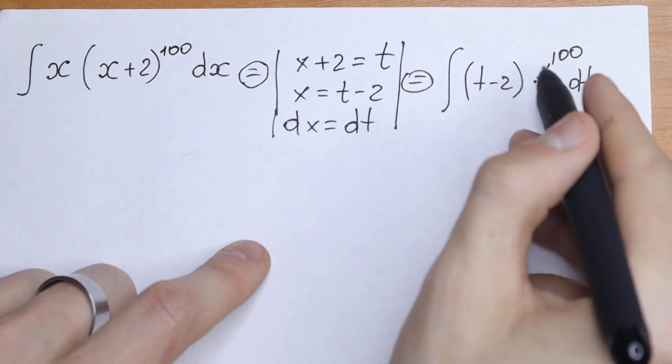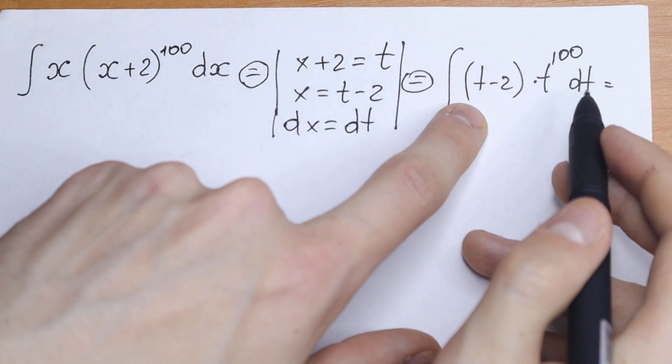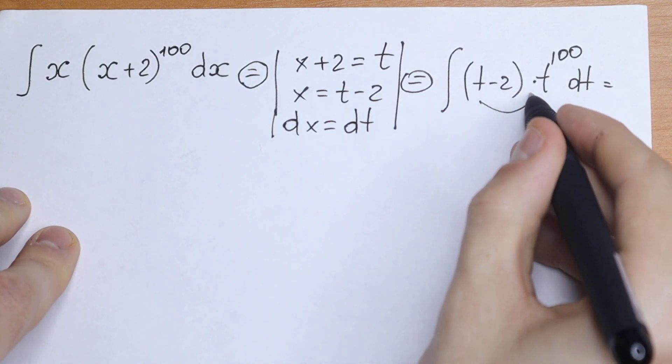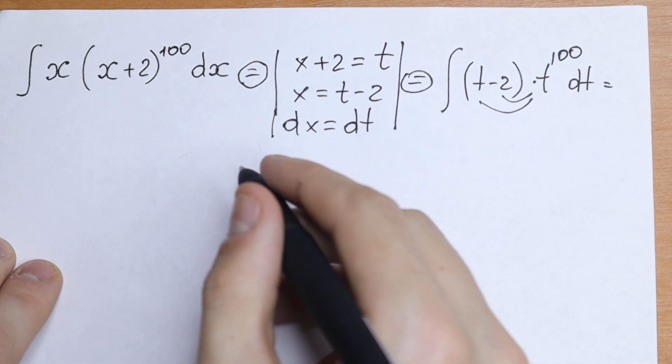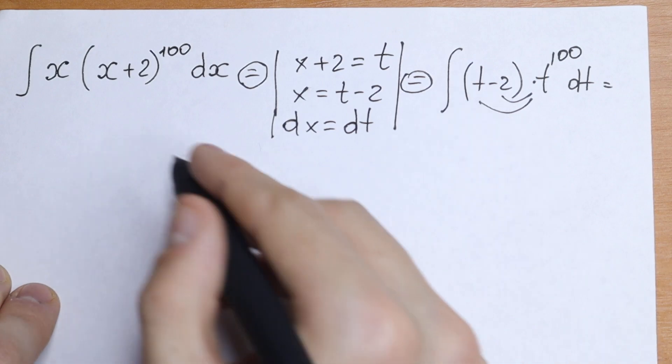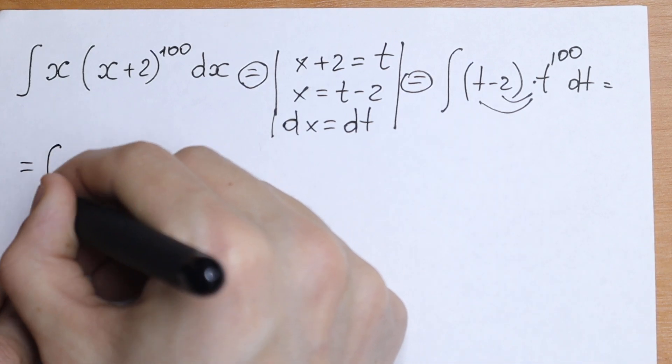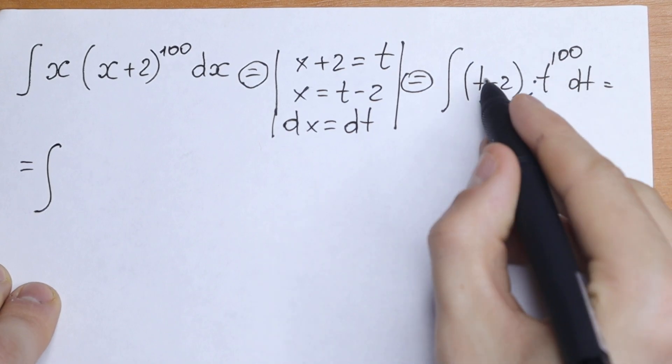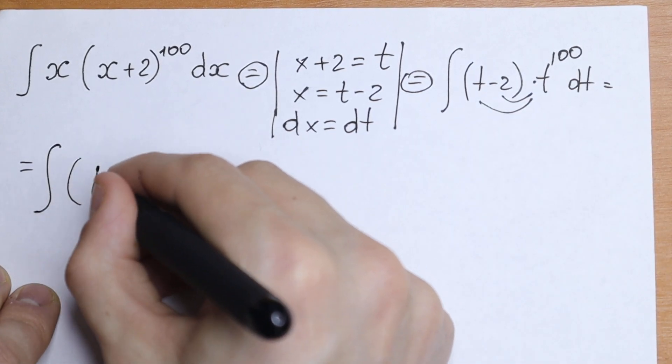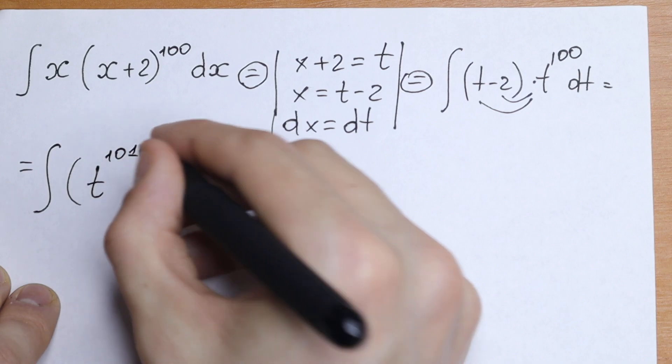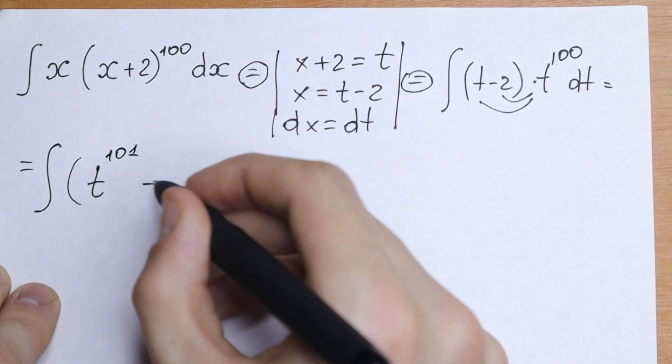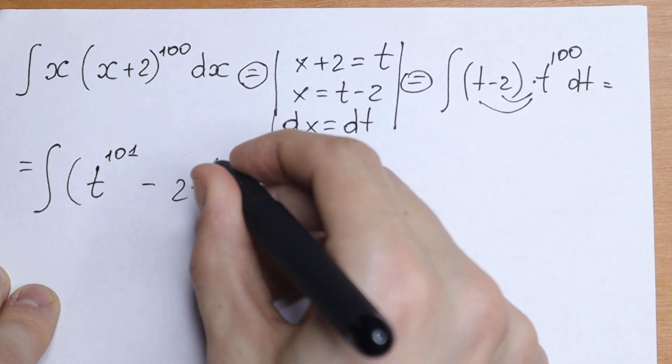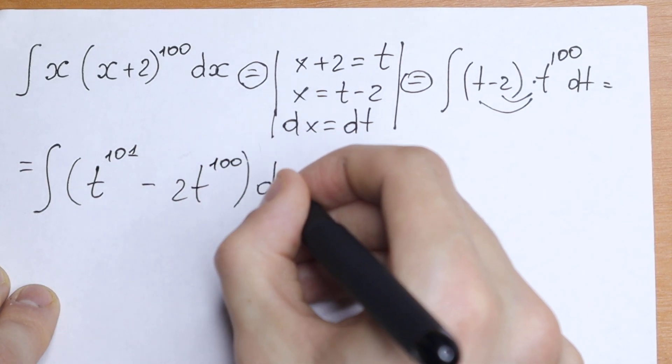And take a look. We can multiply this t to the power 100 by these parentheses. Multiplying first by t and second by 2. As a result we will have that this integral will be equal to integral of these elements. t to the power 100 multiplied by t will be t to the power 101, and minus 2t to the power 100, times dt.